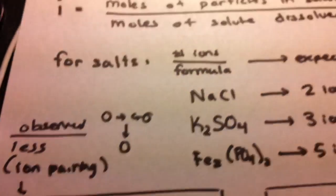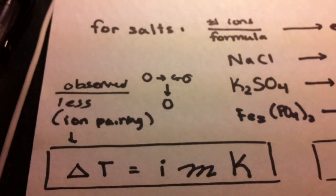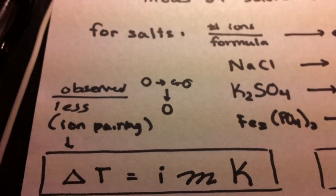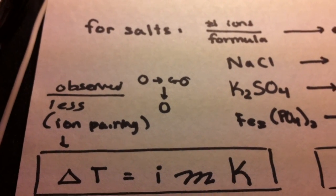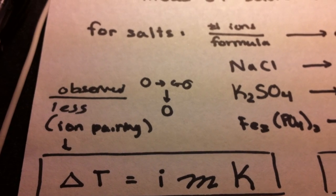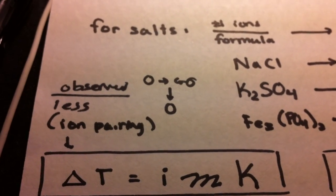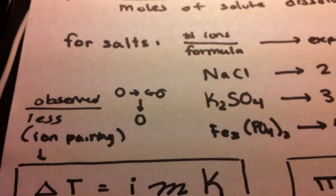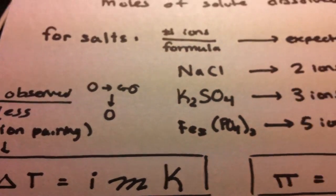With this Van't Hoff factor, we can change the colligative property equations for delta T used for boiling point elevation and freezing point suppression into delta T equals i times m times K.